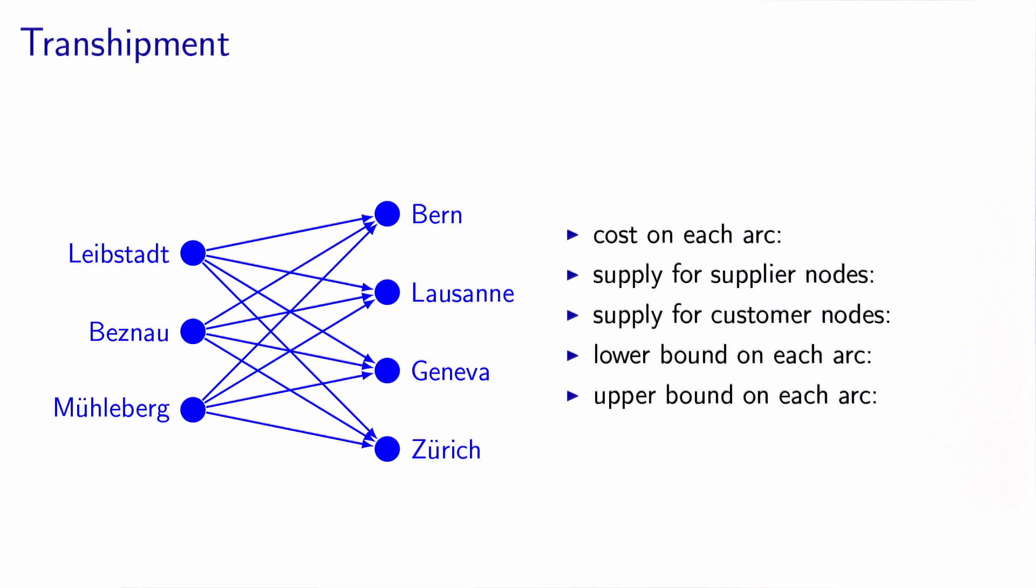Now we are ready to model this as a transshipment problem, where the cost on each arc is this Cij that we have included in the modeling. The supply for the supplier nodes is Si, which is the quantity of energy that each of the plants is generating.